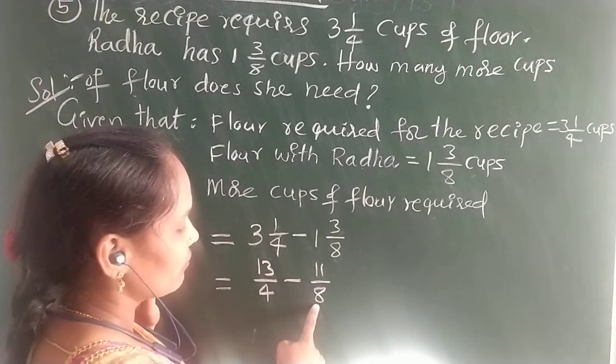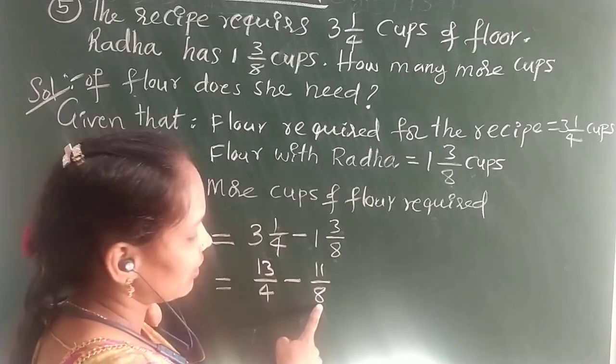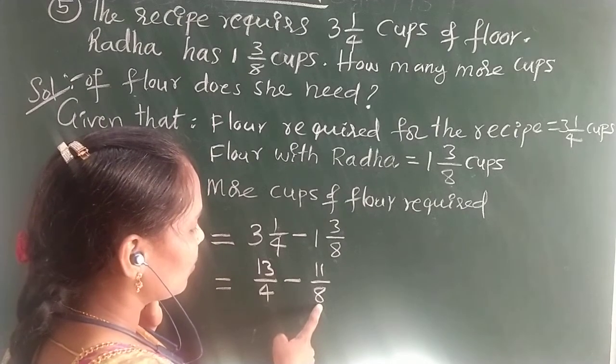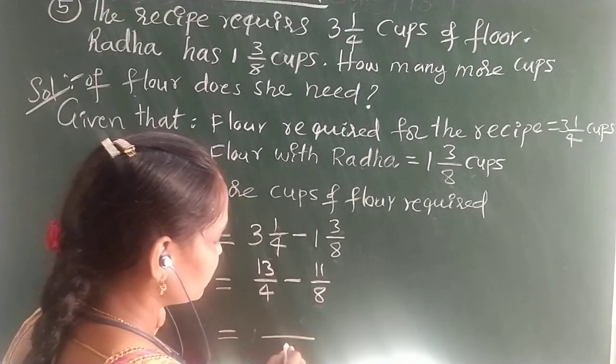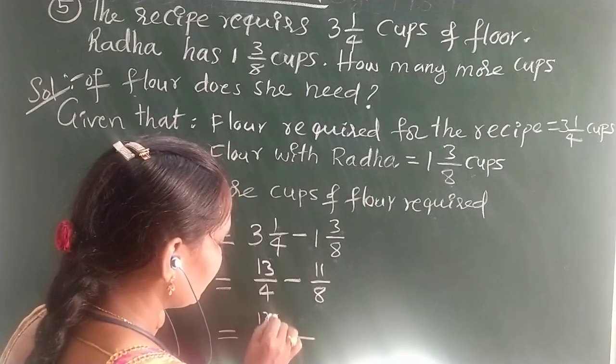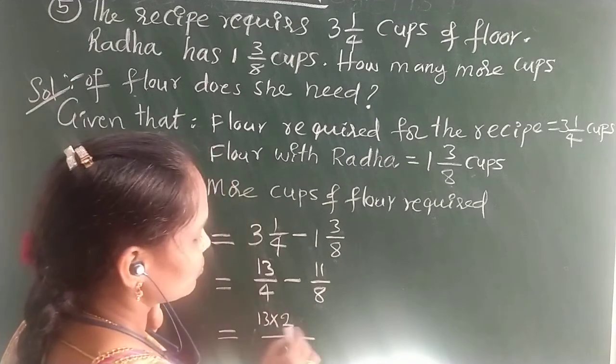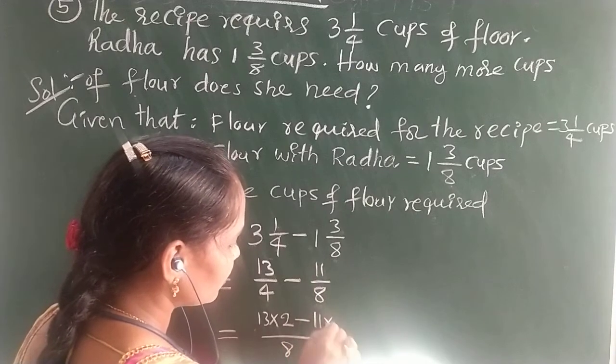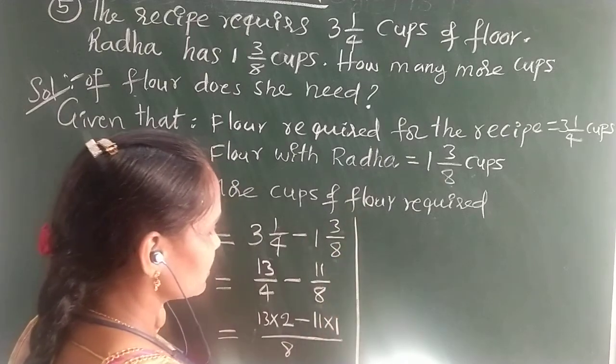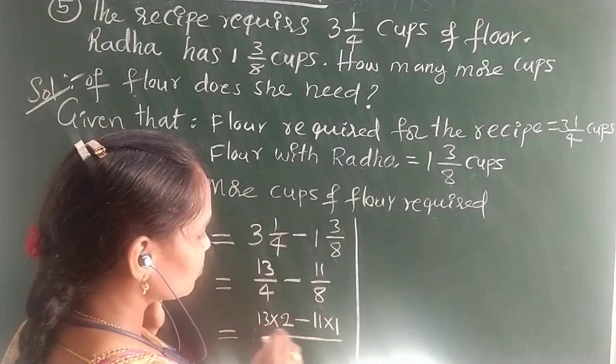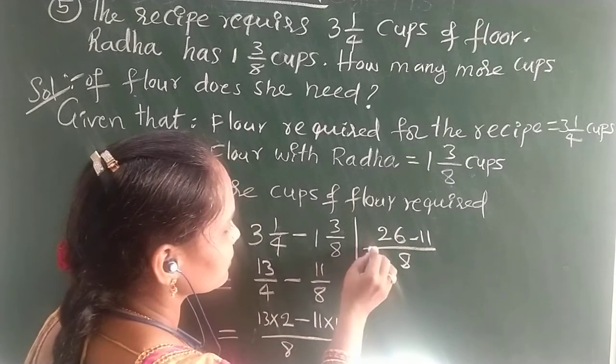See here denominators are different. Whenever denominators are different, we can call those are unlike fractions. We can convert this unlike fractions into like fraction. Before that you have to take the LCM of 4 and 8, what 8 you can take. Now 13 into, 4 in 8, 2 times. 2 times it will go, so 2 you have to write. Next here 11 into, here 8 in 8, 1 time it will go, so into 1 you can write. Next 13 twos are 26 minus 11 divided by 8.